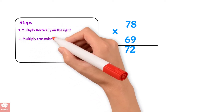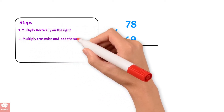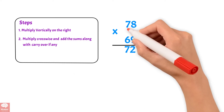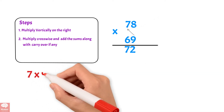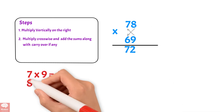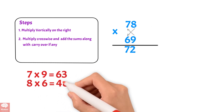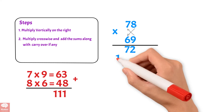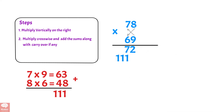Step 2: Multiply crosswise and add the sums along with carryovers if any. 7 times 9, we get 63. 8 times 6, we get 48. If we add 63 and 48, we get 111. Adding the carryover 7 to 111, we get 118.